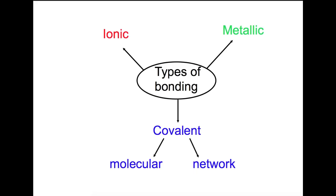Hi and welcome back to my channel. Today we're looking at bonding and properties. Atoms bond to achieve stability. The only elements that don't bond are noble gases, because they have a full outer shell of electrons already. There are different ways that atoms can achieve stability, so there are different types of bonding: ionic bonding, covalent bonding in the form of molecular and network, and metallic bonding. We're going to look at each of these types of bonding in turn.